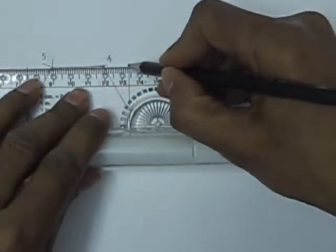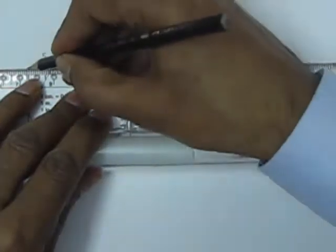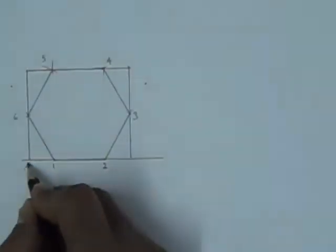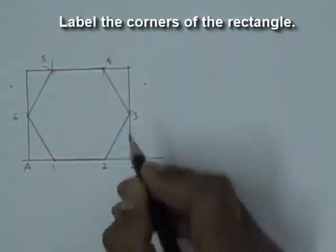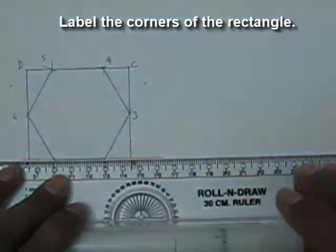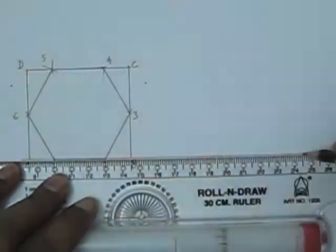In another video we have learnt how to draw isometric view of a rectangular shape or a square. So we draw a rectangle around this hexagon and we label the corners as A, B, C, D.